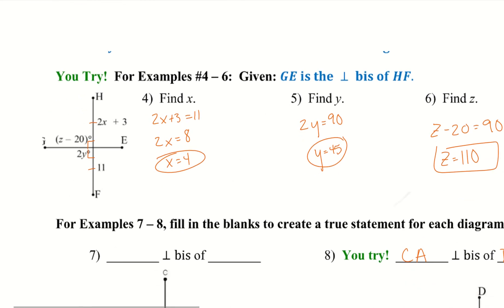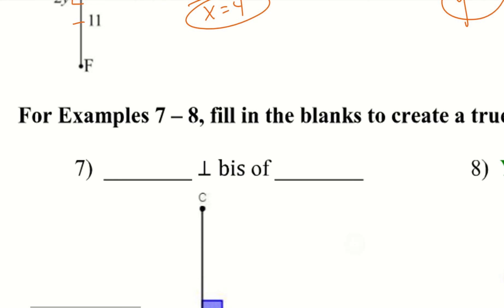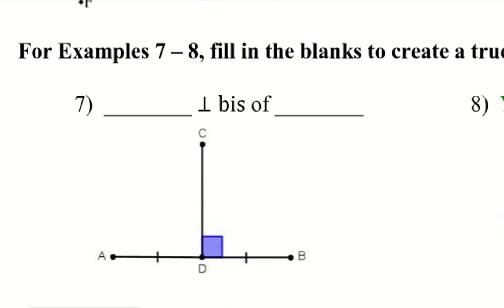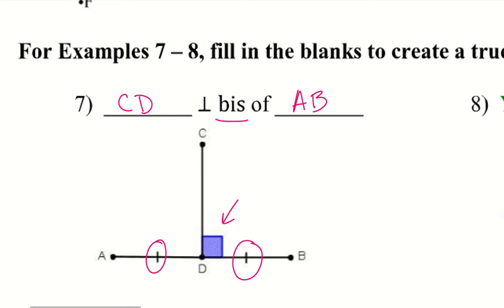Let's look at seven and eight — we need to fill in the blanks to create a true statement. One segment is a perpendicular bisector of the other. Whichever line does not have the extra dashes to show congruence is the one doing the bisecting. So CD is the perpendicular bisector: we have our 90-degree angle and the two congruent parts of the larger segment. CD is the perpendicular bisector of AB.